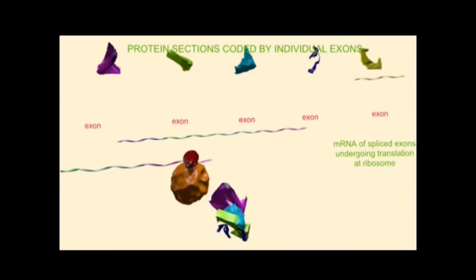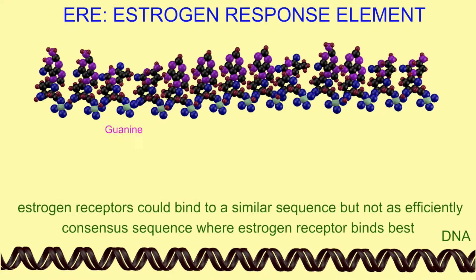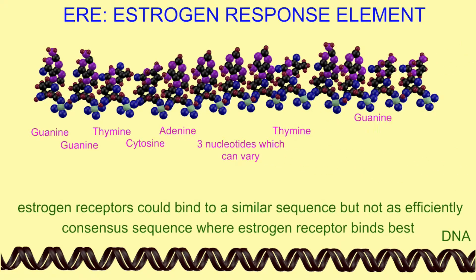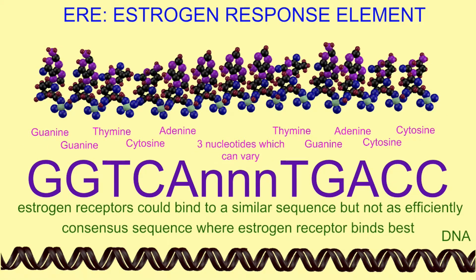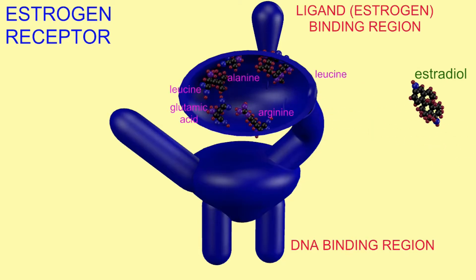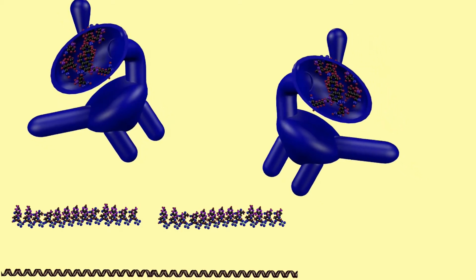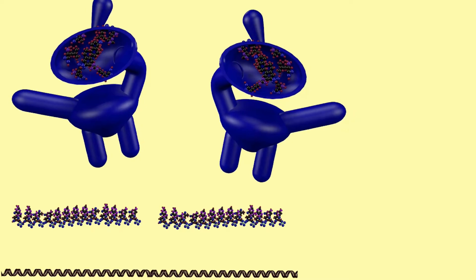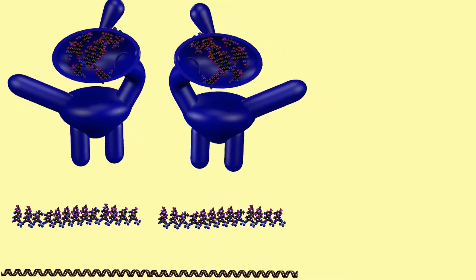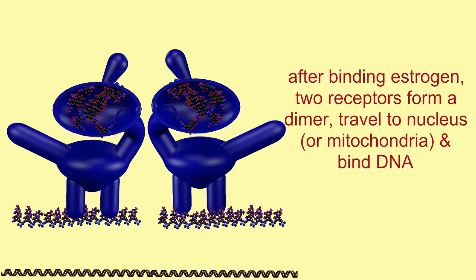Estrogen receptor alpha and beta are similar. The portions which bind DNA to turn on genes are extremely similar — maybe 95% identical or more — whereas those which bind the ligand, like estrogen, are only about 55% identical. They form dimers: homodimers of two estrogen receptor alphas, homodimers of two estrogen receptor betas, or heterodimers with one of each.